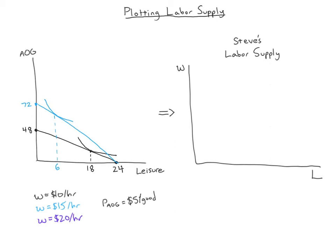Finally, at a wage of twenty dollars per hour, I get a new budget constraint with an even steeper slope. The real wage is twenty over five, which is four goods per hour, so the maximum I could buy is 96 goods. But now that I'm getting paid so much per hour, I don't need to work as much, so I decide to take about ten hours of leisure per day.